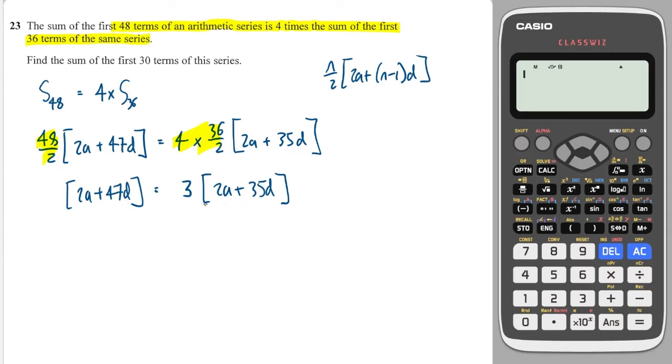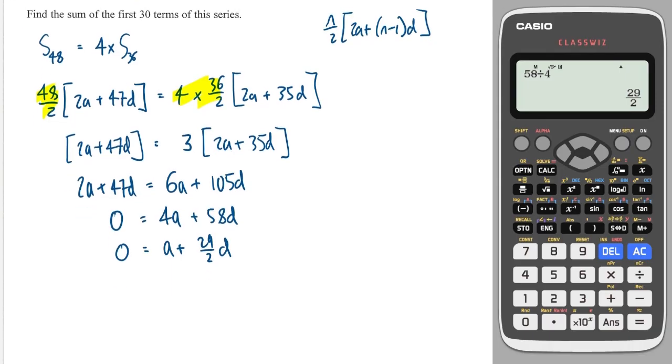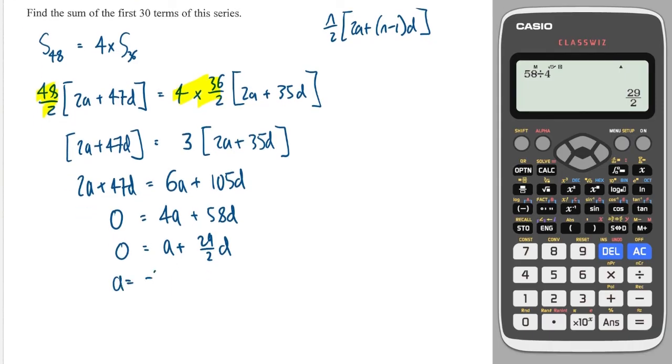Okay, so we might be looking a bit stuck here because we've got an equation which has two unknowns, and there's no way for me to solve it. But what I'll do is I'll carry on, and we'll see where we get to. So this is going to give me 6a plus 35 times 3 is 105d. So let's make it equal to 0, so we have them all on the same side. So take away 2a gives me 4a from 6a. And take away 47d gives me 58d. Okay, and then I can divide both sides by 4. So I get 29 over 2. So a plus 29 over 2 times d is equal to 0. Which means that a is equal to minus 29 over 2 times d.